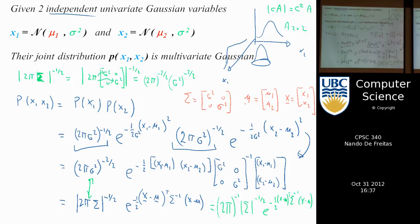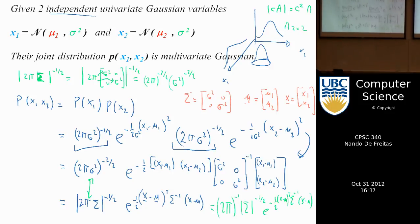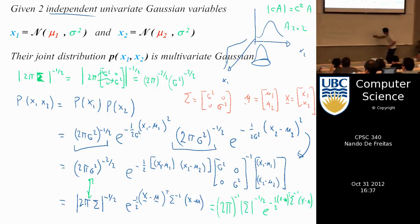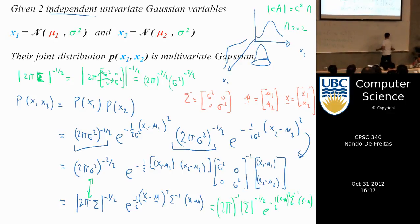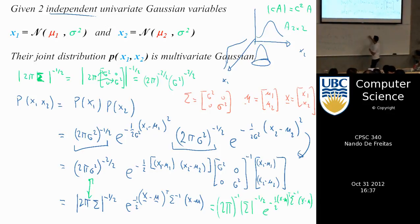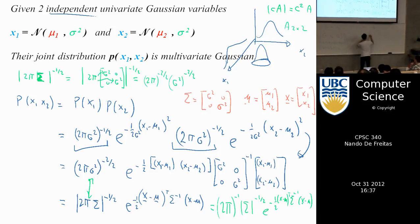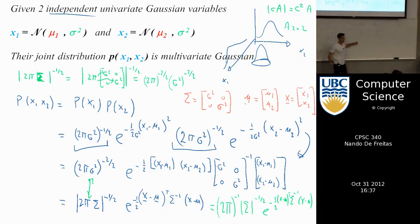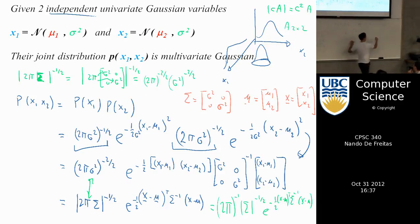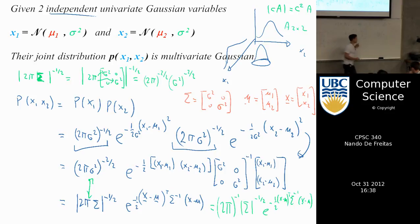Let's do this with a 2×2 matrix example. Let's say A is some matrix. The determinant of A is 6.